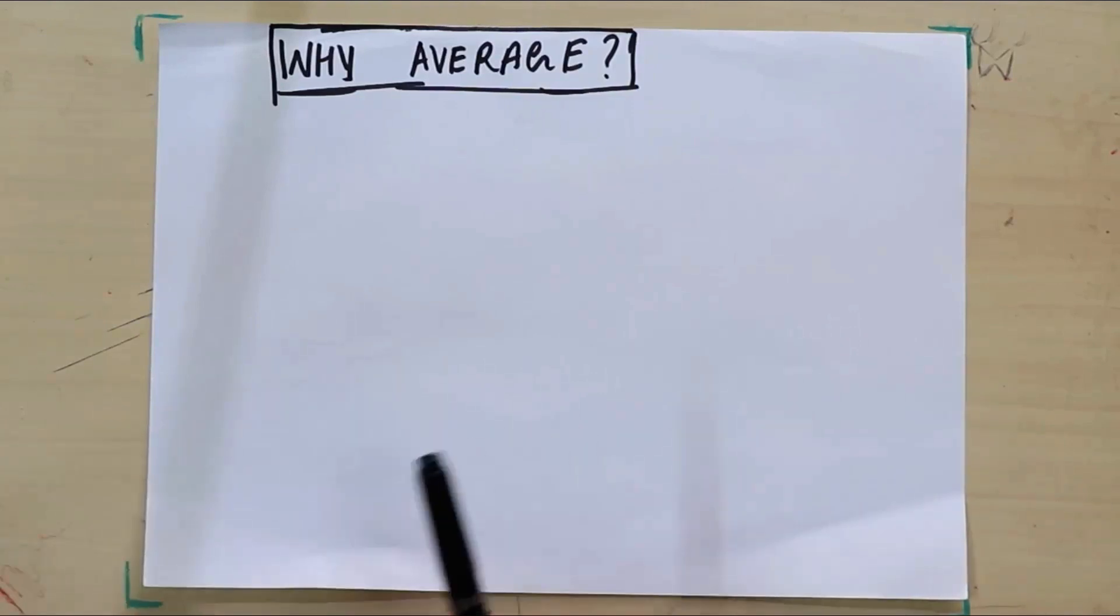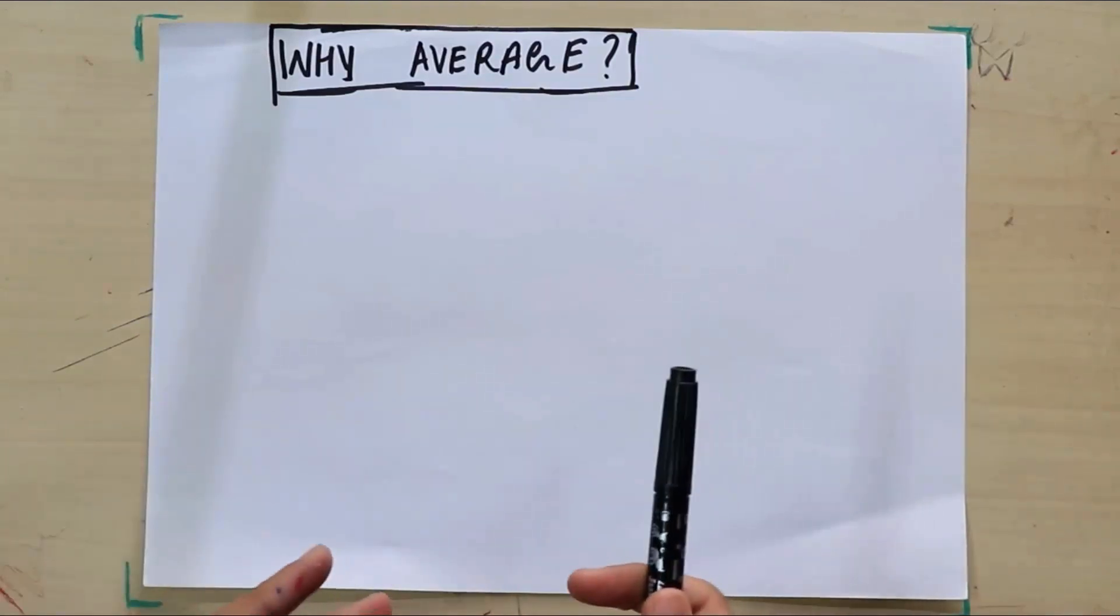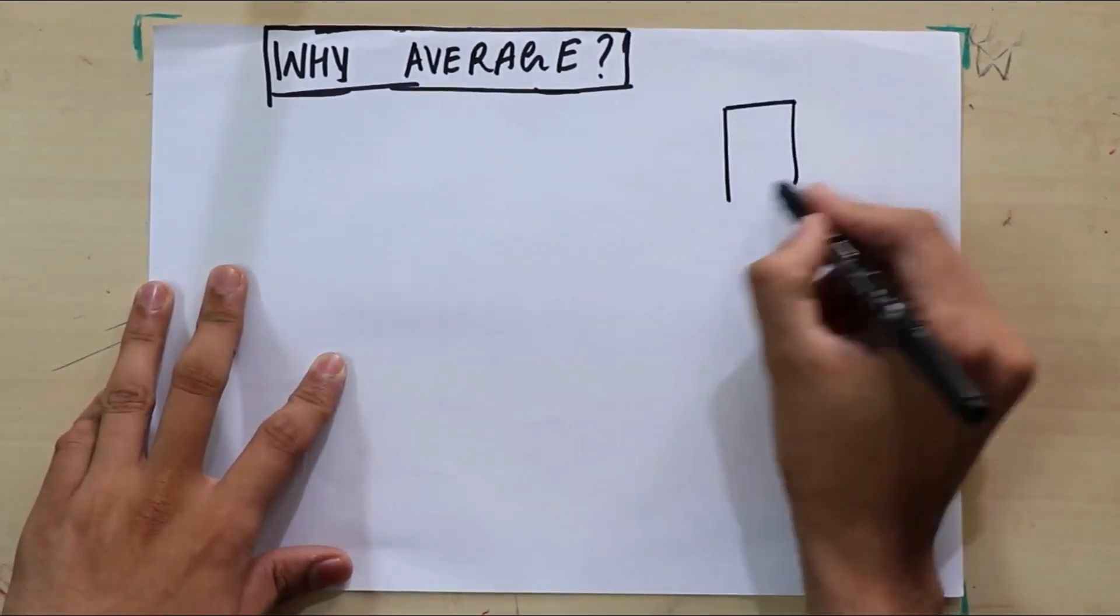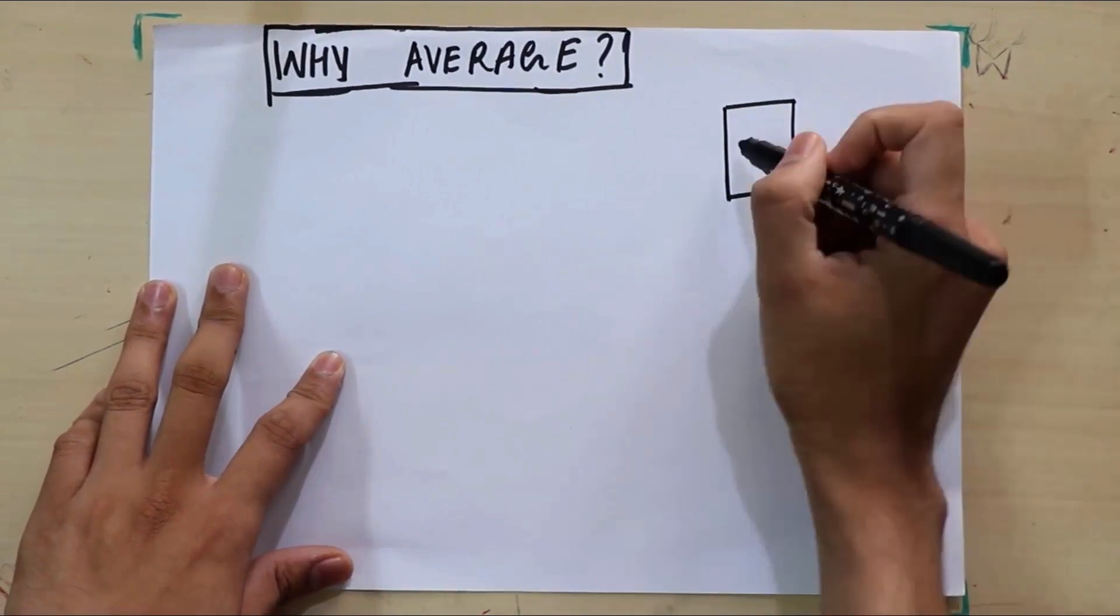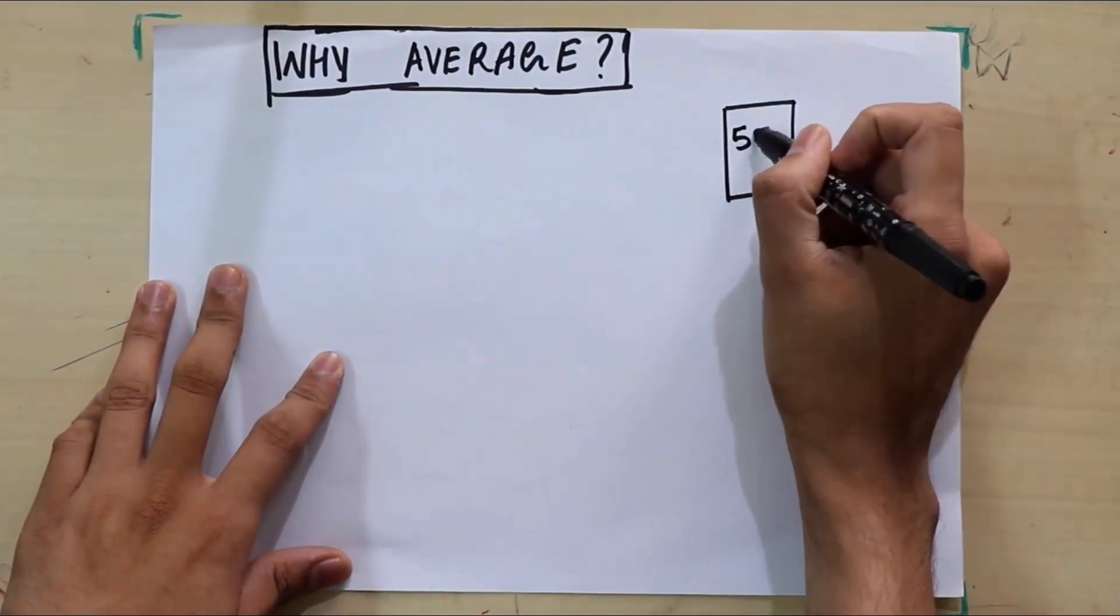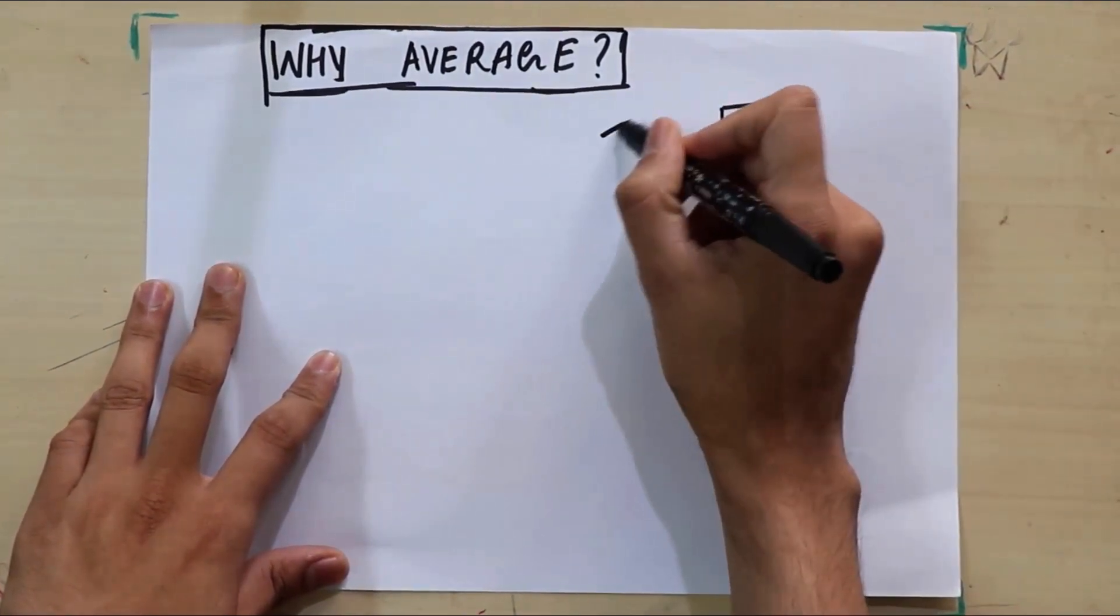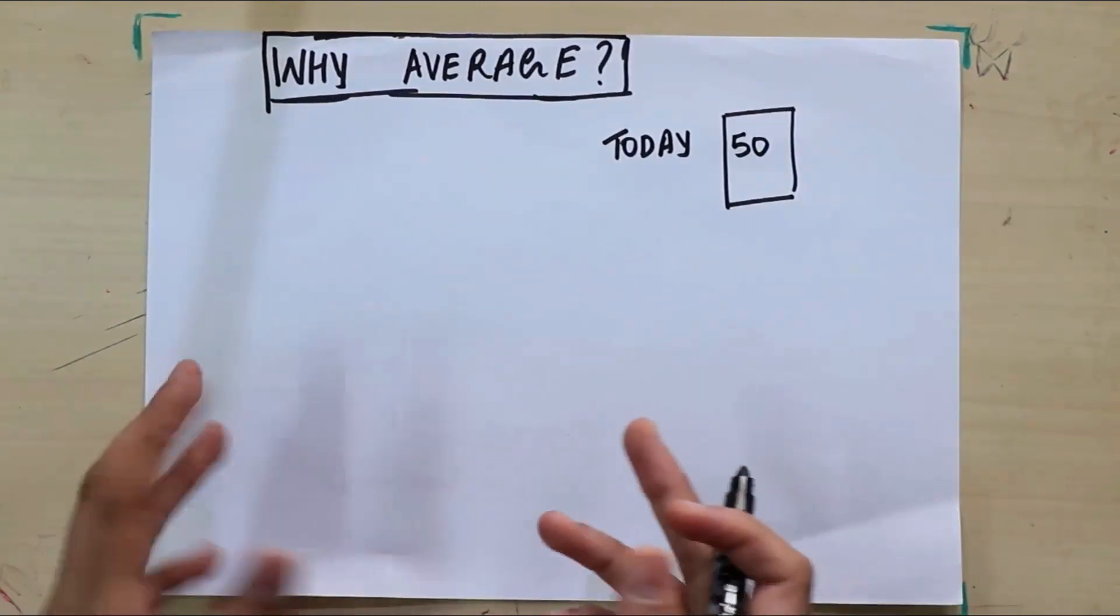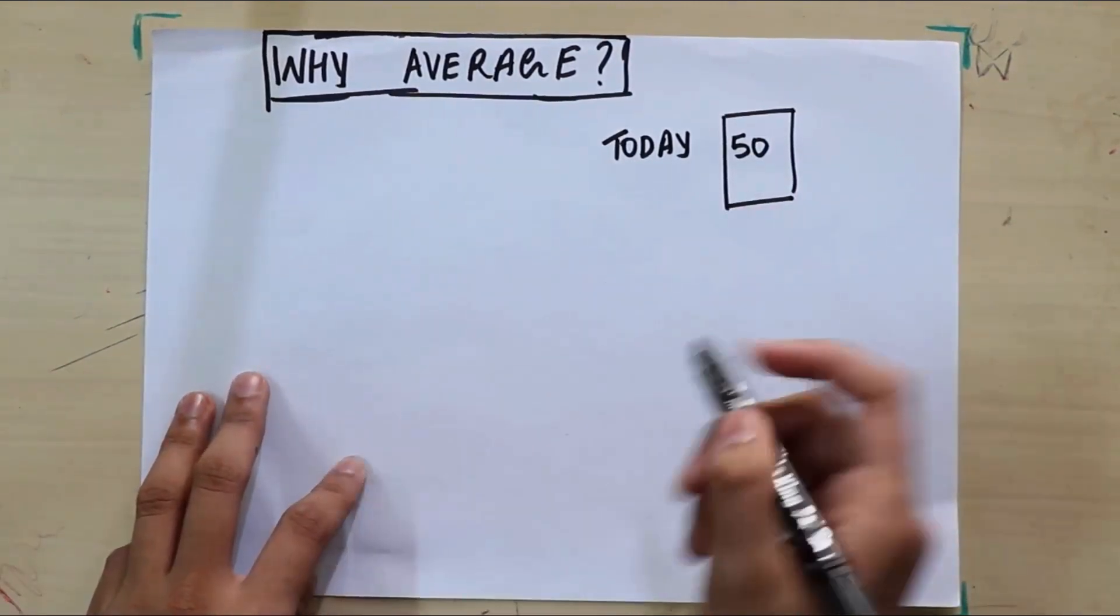why we call them average speed and average velocities. So let me give an example. I buy 50 candies and I store them in the refrigerator, and that's the situation today. I have a roommate who loves candies. I'm pretty sure he's going to go and eat some, but after five days